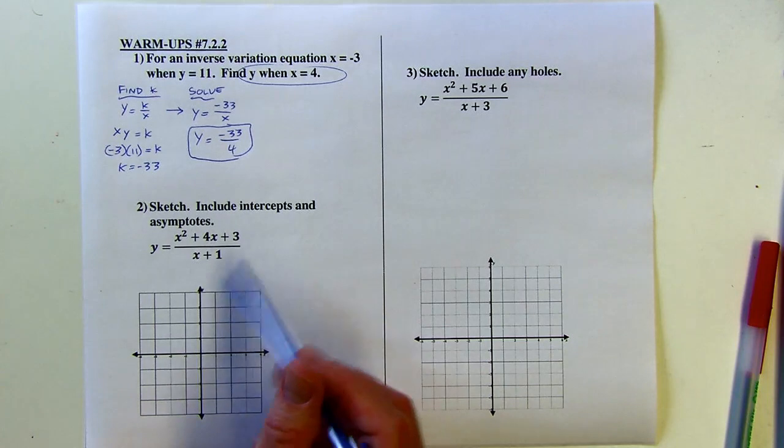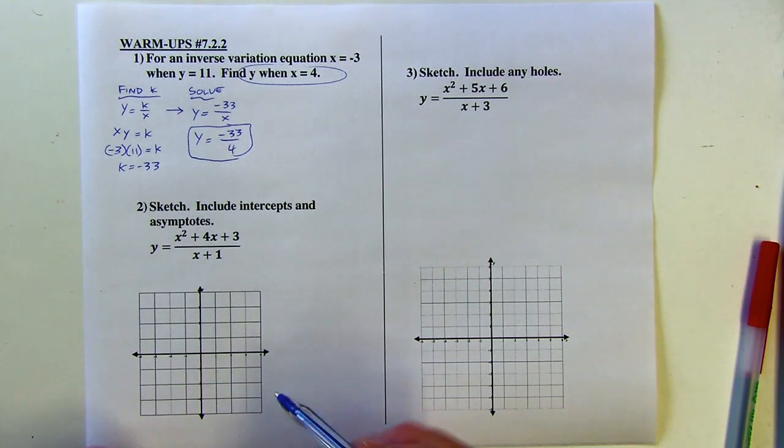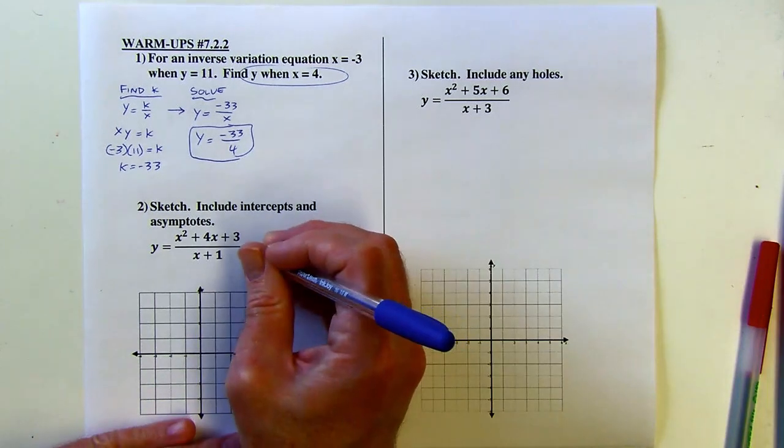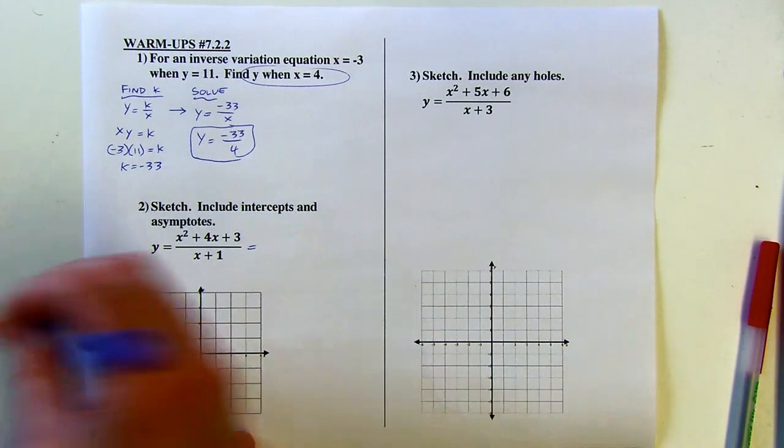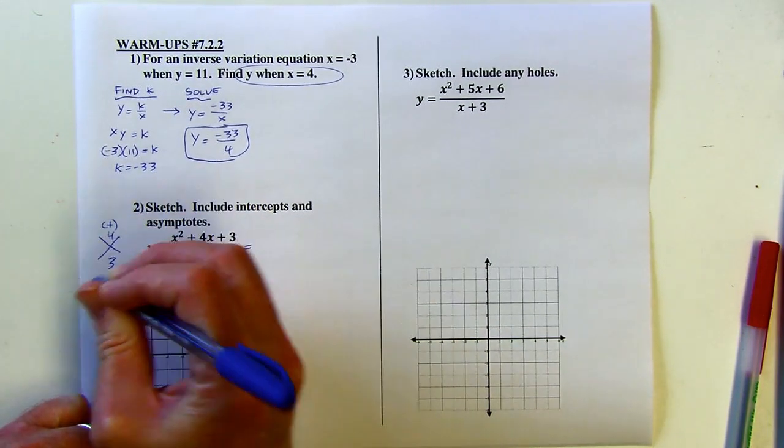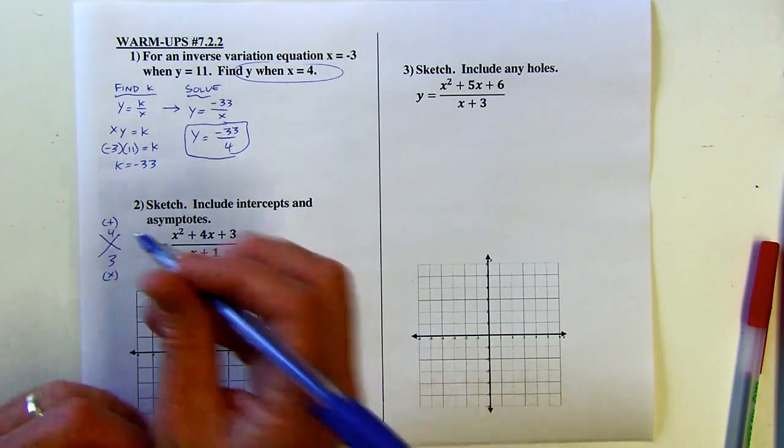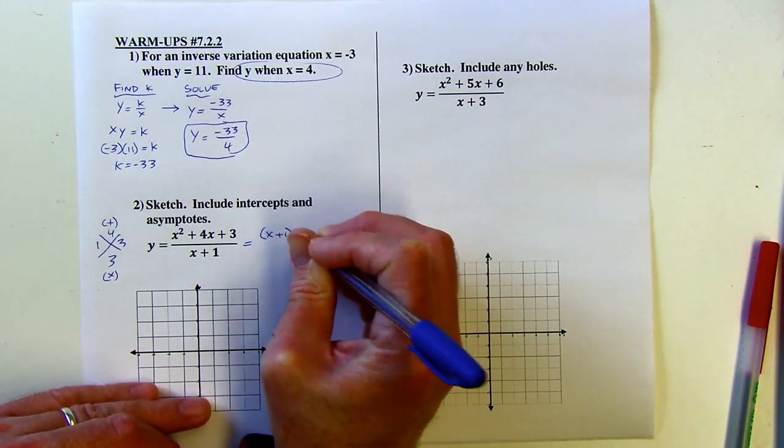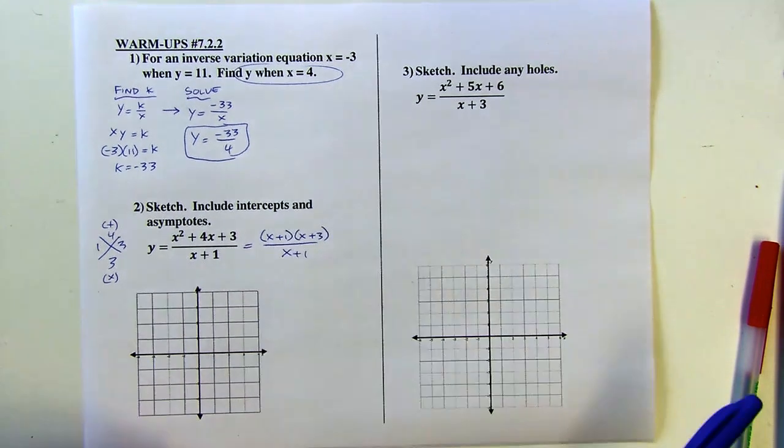So let's graph this. I'm going to include intercepts and asymptotes. Actually, the intercept will be obvious. It's just going to be a y intercept. But I'm going to factor the top of this to see if it will reduce. And you could do a diamond problem here. I'm looking for two numbers that add to 4, multiply to 3. That's going to be 1 and 3, right? So this factors into x plus 1 times x plus 3 in the numerator. Then I can do some reducing.